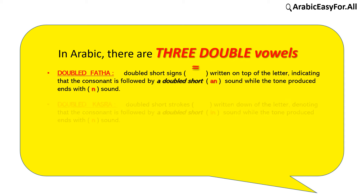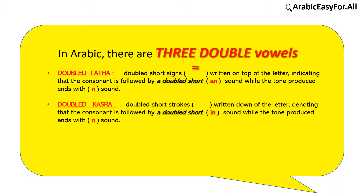Doubled كسرة are doubled short strokes written below the letter, denoting that the consonant is followed by a doubled short N sound, while the term produced ends with an N sound.